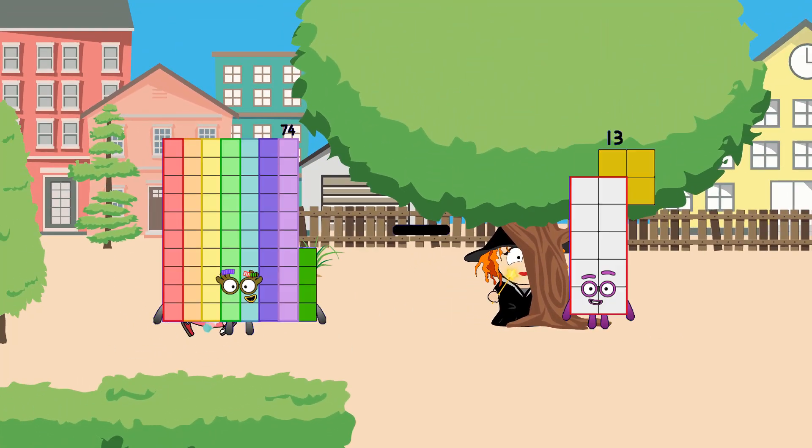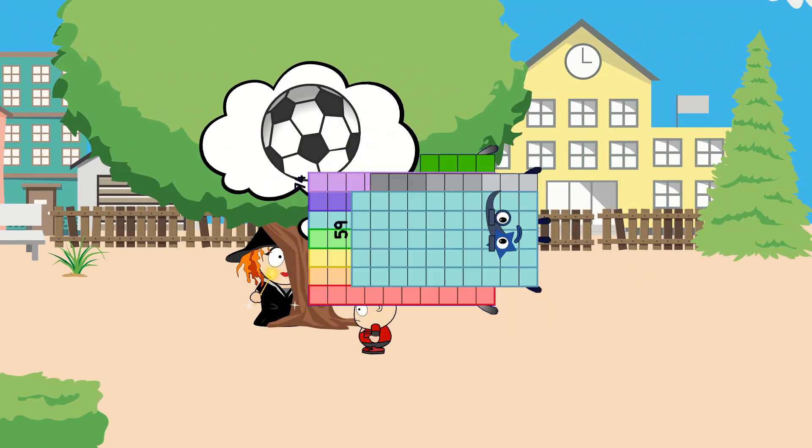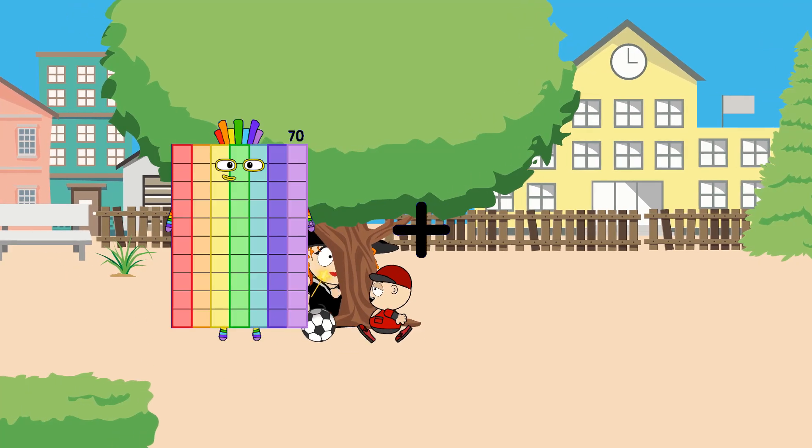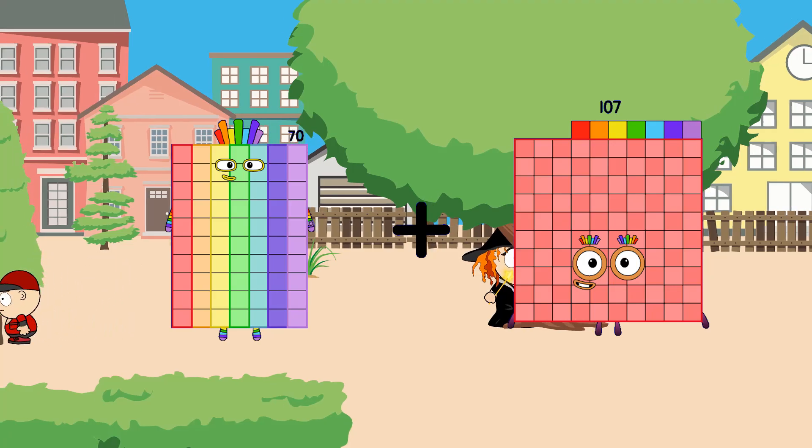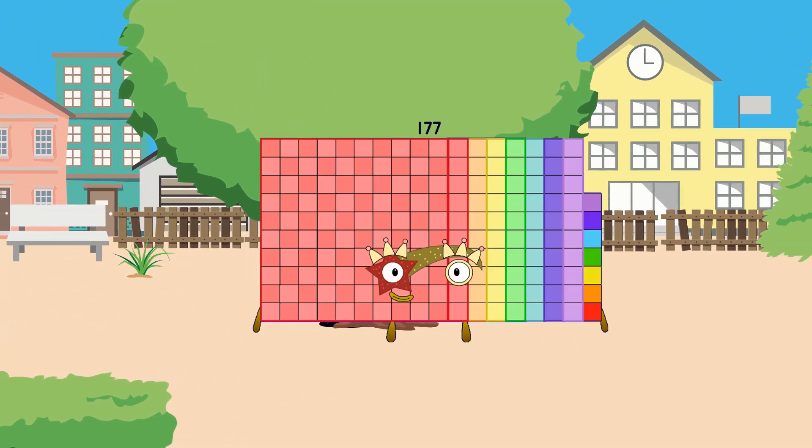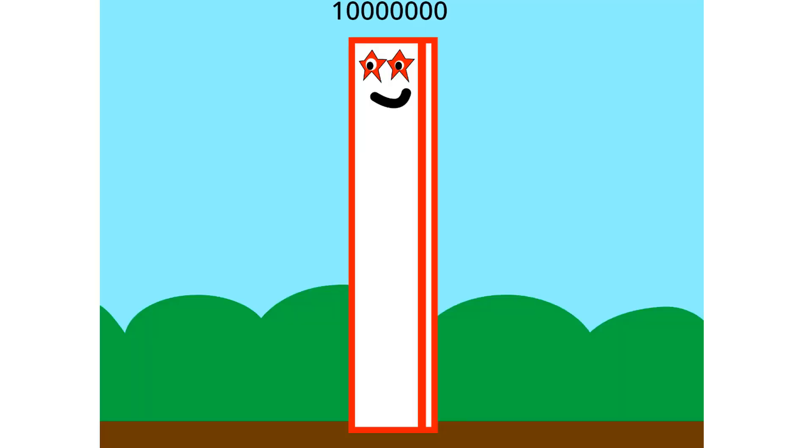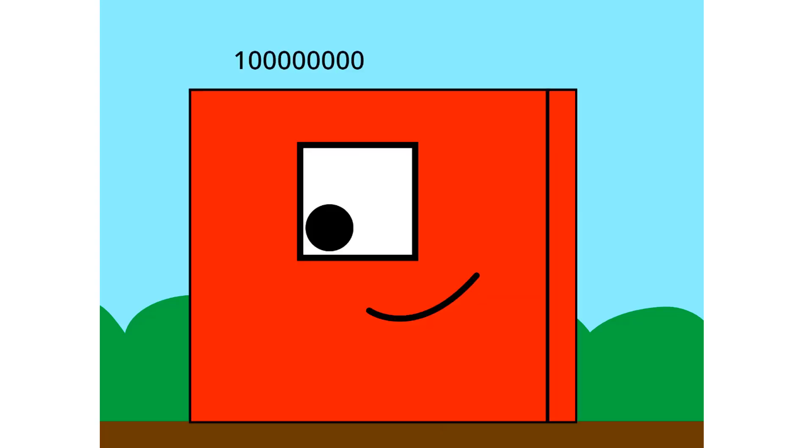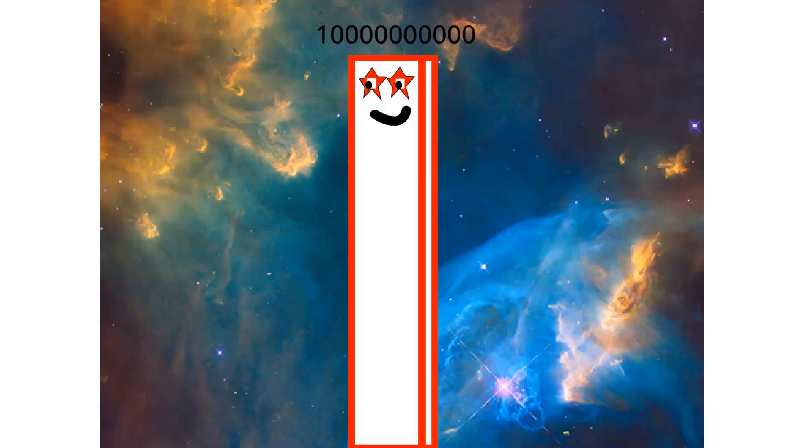74 minus 59 equals 15, 70 plus 107 equals 177. A million, 10 million, 100 million, 1 billion, 10 billion.